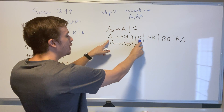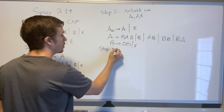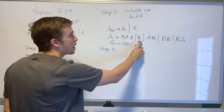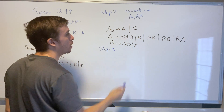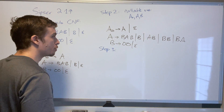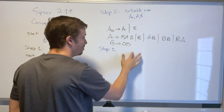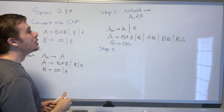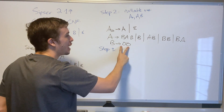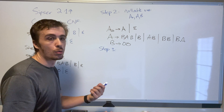We're still not done because we have a singular variable on the right-hand side — these are called unit rules. Step three is to eliminate unit rules. The trick is to copy and paste rules around. B has no unit rules, so it can just be copied wherever we see a B. We also need to delete the remaining epsilon rule for B.